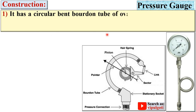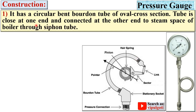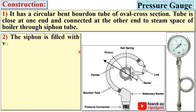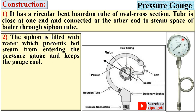It has a circular bent Bourdon tube of oval cross section. The tube is closed at one end and connected at the other end to the steam space of the boiler through a siphon tube, which you can see here. One end is connected to the Bourdon tube pressure gauge and the other end is connected to the steam space of the boiler shell. The siphon is filled with water, which prevents hot steam from entering the pressure gauge and keeps the gauge cool.